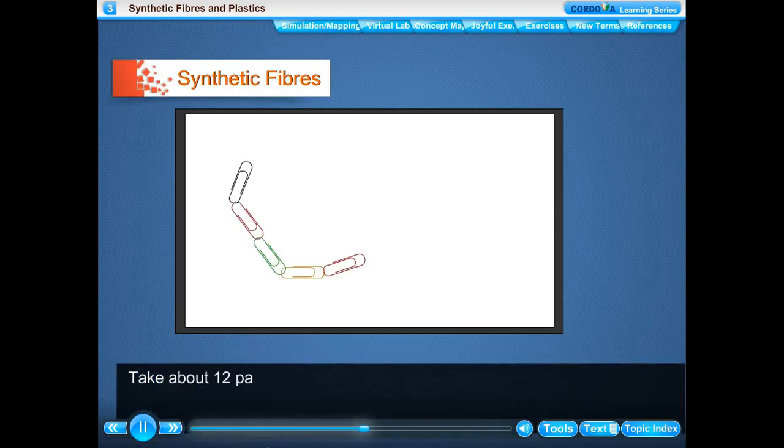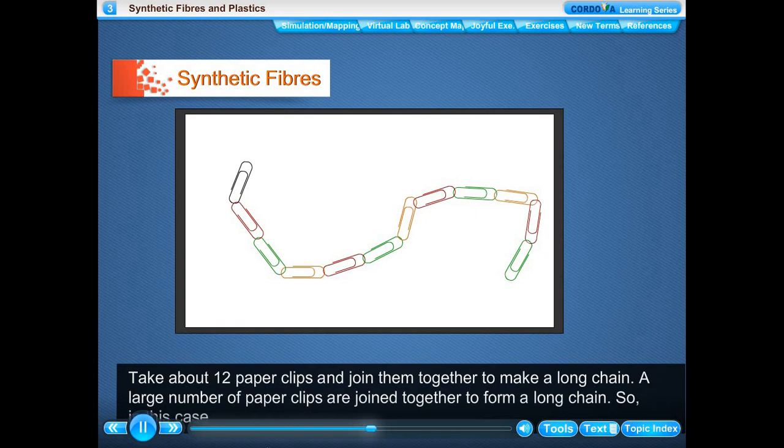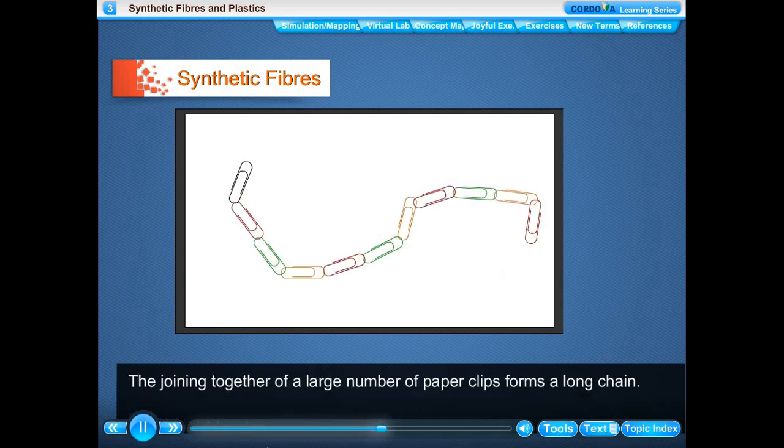Take about 12 paperclips and join them together to make a long chain. A large number of paperclips are joined together to form a long chain. So in this case, the paperclip is a smaller unit. The joining together of a large number of paperclips forms a long chain.